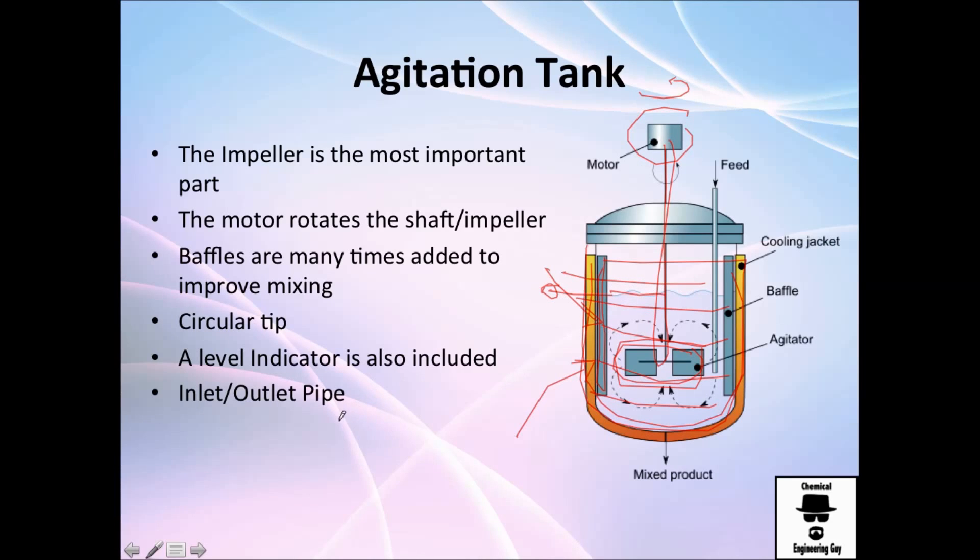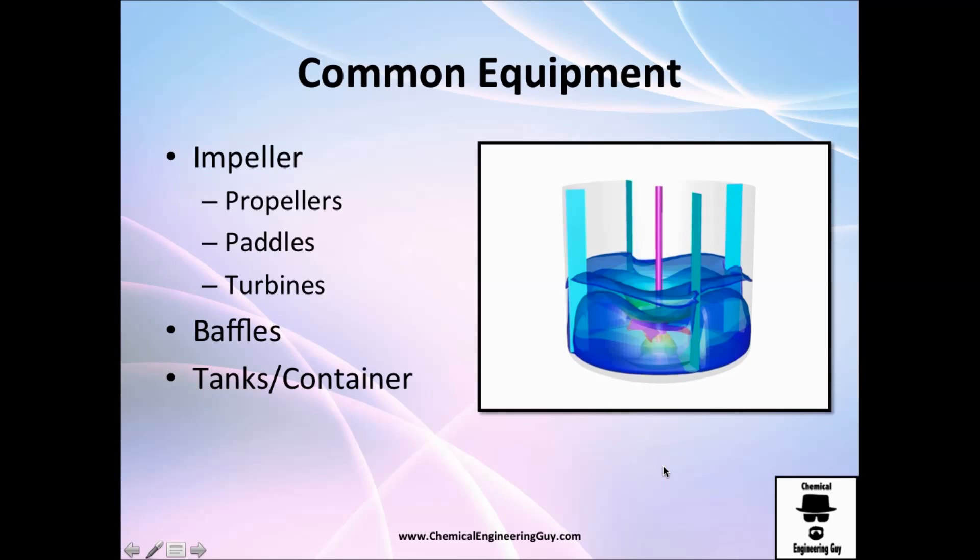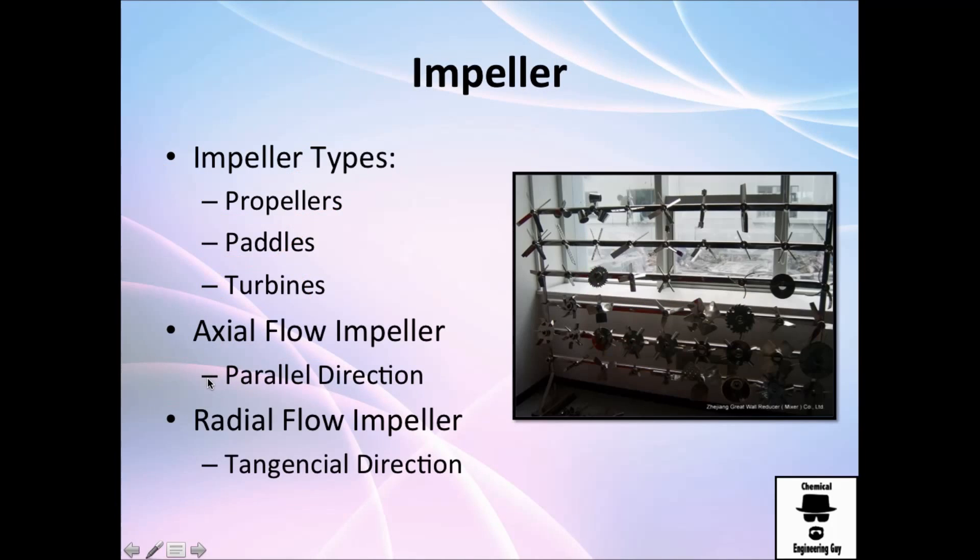You need to have a level indicator. You will definitely have an inlet pipe which will show the feed, and the outlet pipe which might be the same as the feed pipe or probably you're going to have it right here where the product goes out. Common equipment needed: you need an impeller which is a set of either propellers, paddles, or turbines, more commonly propellers, the baffles I told you about, and the tank or container or vessel.